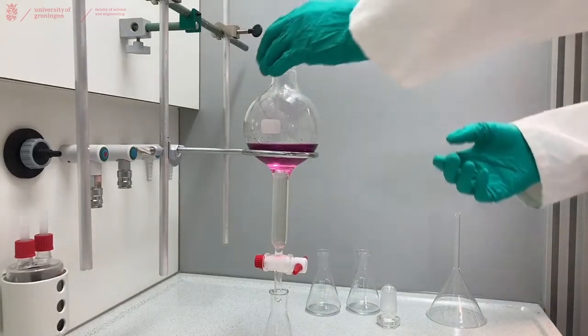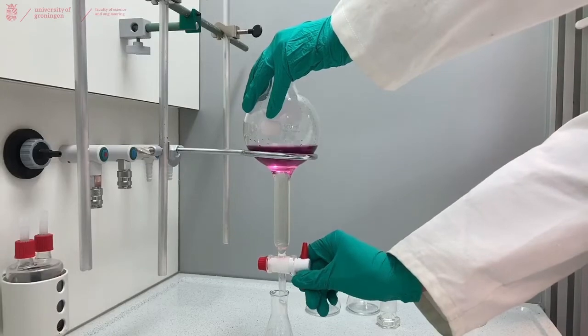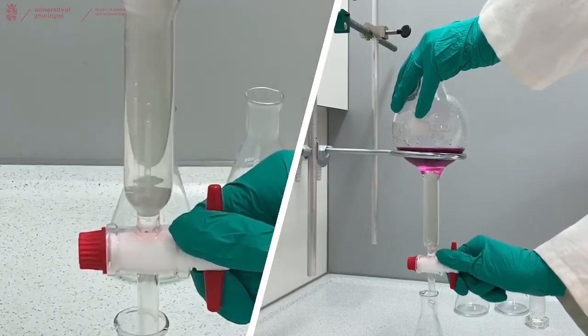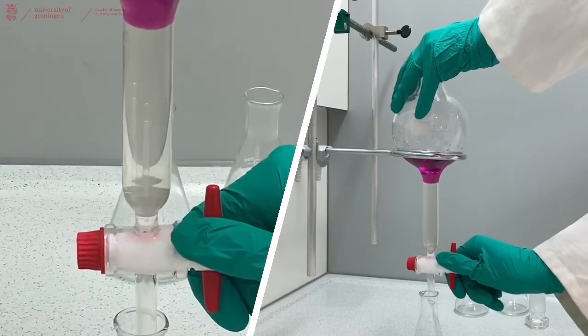Now we want to separate these two layers by opening the tap and let the water flow out into our Erlenmeyer. Keep an eye on the separation and close the tap before the pentane leaves the separation funnel.